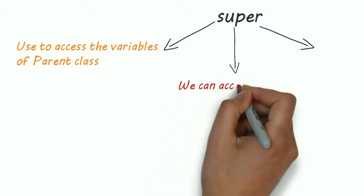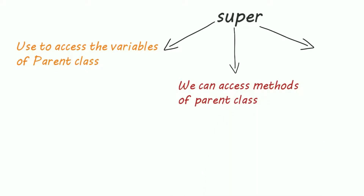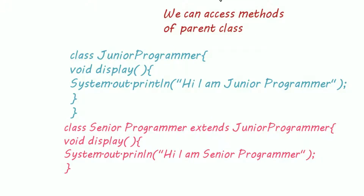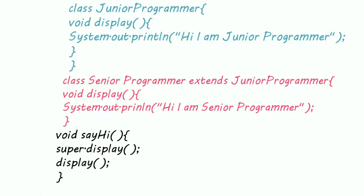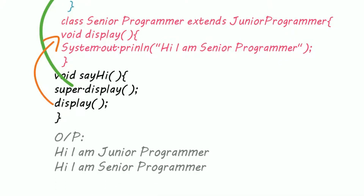The second use of the super keyword is similar to the first, but rather than accessing a variable of the parent class, we access methods of the parent class. For example, both JuniorProgrammer and SeniorProgrammer have a display method. When I call display inside the hi method, it refers to the display method of SeniorProgrammer. But when I write super.display(), it calls the display method of JuniorProgrammer, that is the parent class. This is the output of the program.